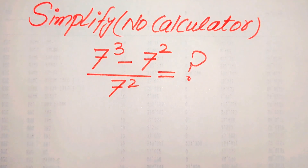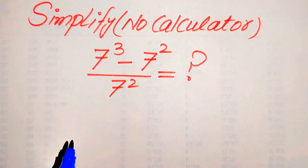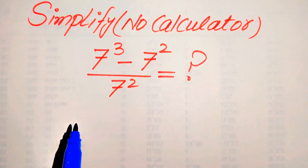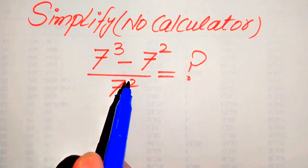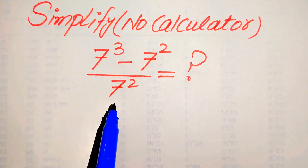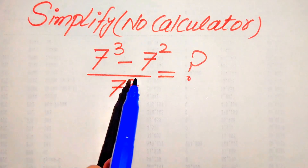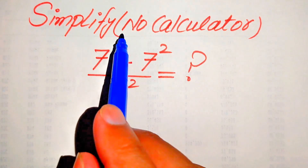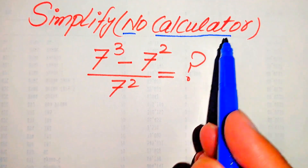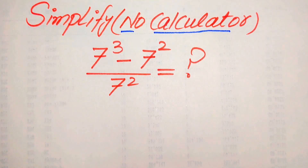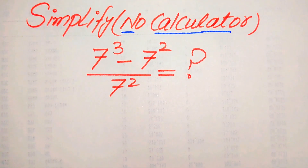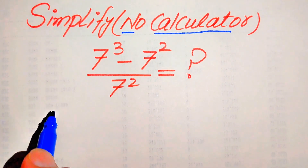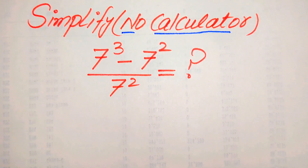Hello everyone. How to simplify this nice algebraic expression: 7 cubed minus 7 squared, divided by 7 squared. We write this algebraic expression into simplified form. Remember, a calculator is not allowed in this problem. This means we need to show all of the working on paper, and we will solve this problem using two methods.